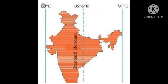To avoid any confusion with respect to time at different places in India, the almost centrally located longitude of 82 degrees 5 minutes east has been selected as the standard meridian for the whole country. The local time of this longitude is used as the Indian Standard Time, or IST.